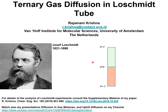Josef Lohschmidt, a pioneer of 19th century physics and chemistry, deserves to be better known in the English-speaking world. Born on 15 March 1821 in a small village near Karlovy Vary in what is now the Czech Republic, Lohschmidt was the son of a poor Bohemian farmer.